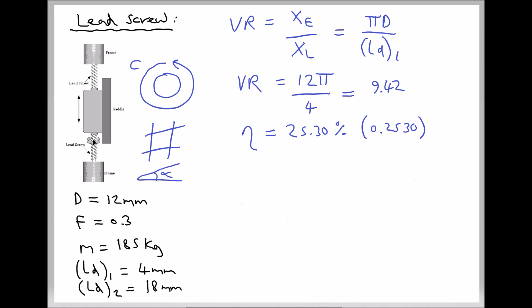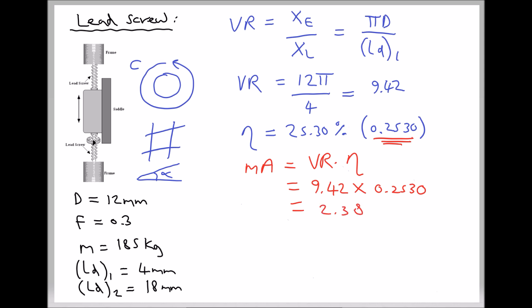Now we have our velocity ratio and our efficiency, we can work out our mechanical advantage, because mechanical advantage is just velocity ratio times efficiency. The important thing to remember is that efficiency is expressed as a decimal. We found that the efficiency was 25.30%, which is 0.2530 as a decimal. So our mechanical advantage is 9.42 times 0.2530, giving us a mechanical advantage equal to 2.383. Again, it's a ratio, so we don't need to add any units.